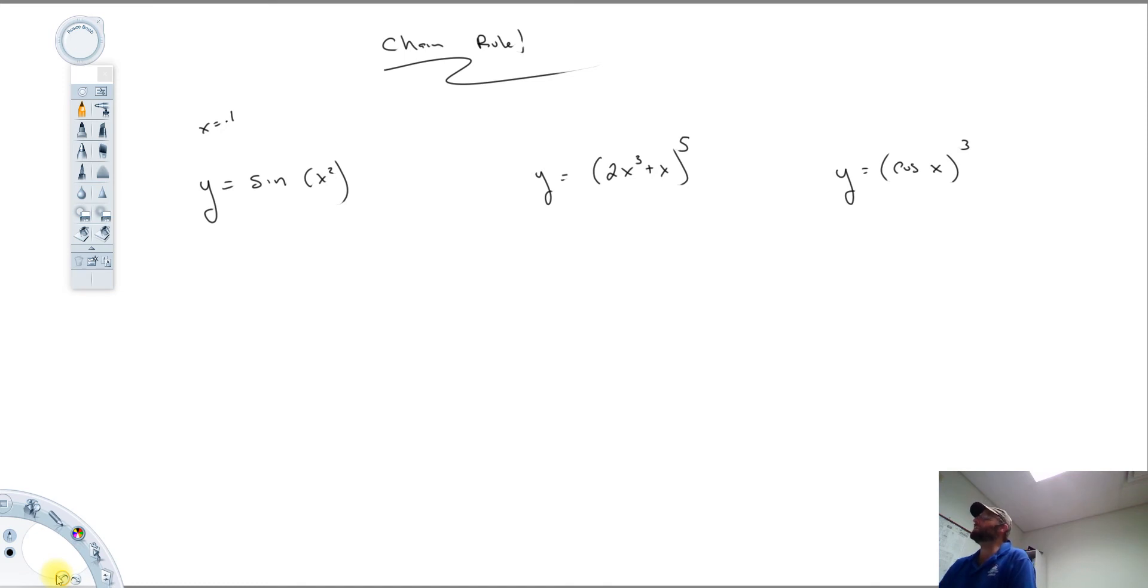So you have to recognize when you're looking at a composition of functions, right? Not a product of functions, a composition of functions. So here, if f were sine x and g were x squared, what we are looking at right there is f of g of x.